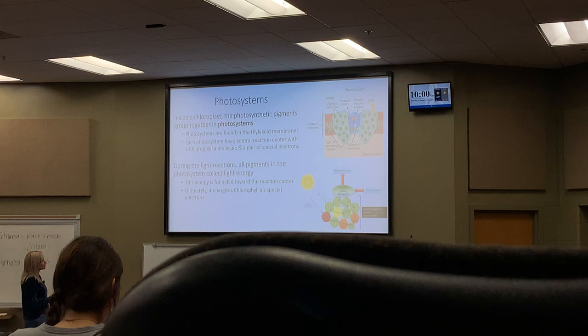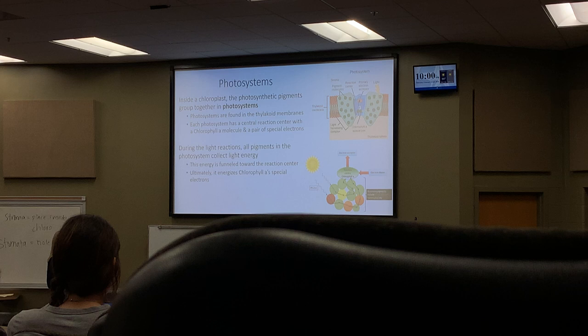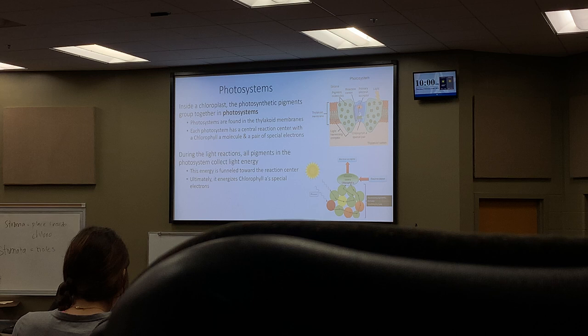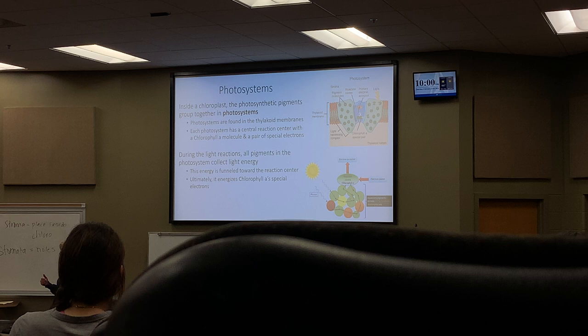During the light reactions, all of the pigments in the photosystem collect the light energy, and that energy is funneled toward the reaction center. Ultimately it will energize the special electrons of chlorophyll a. The energy coming from the sun — the photons — has now been transferred into electrons. You can think of electrons as being energy; these electrons have a lot of energy because they have been energized.